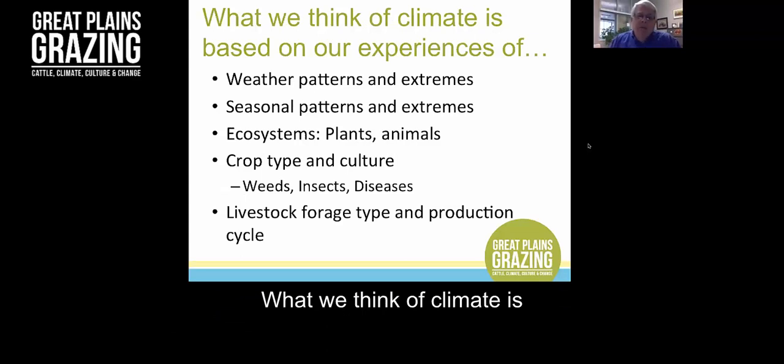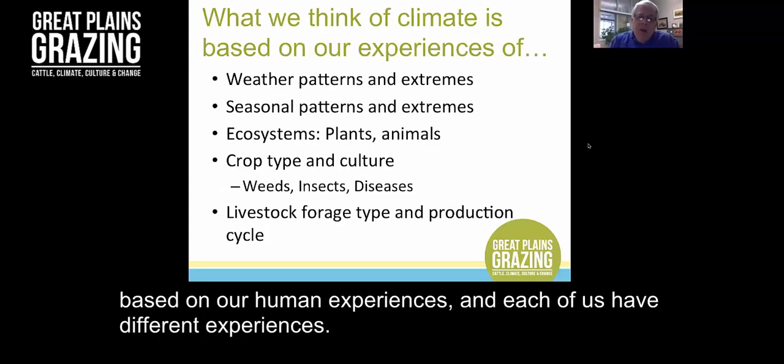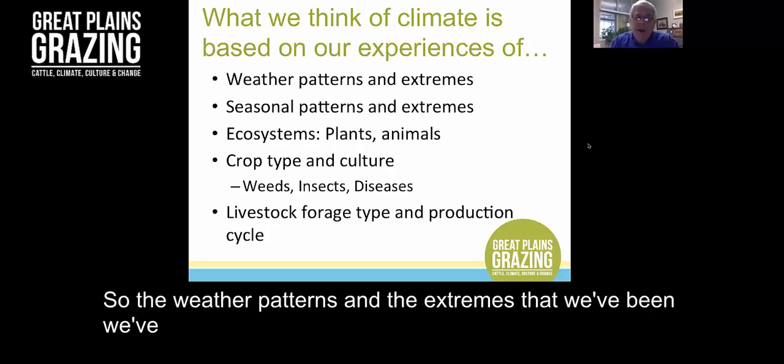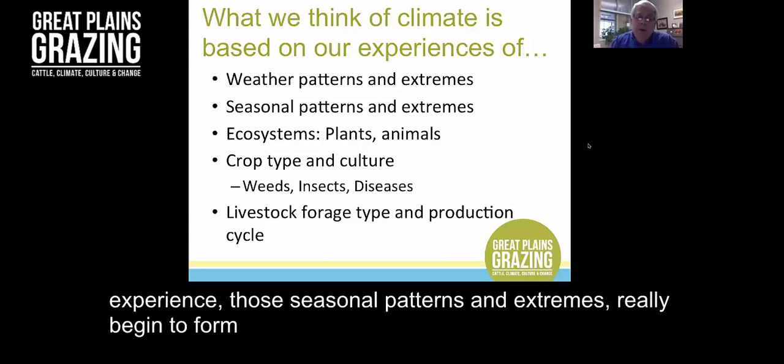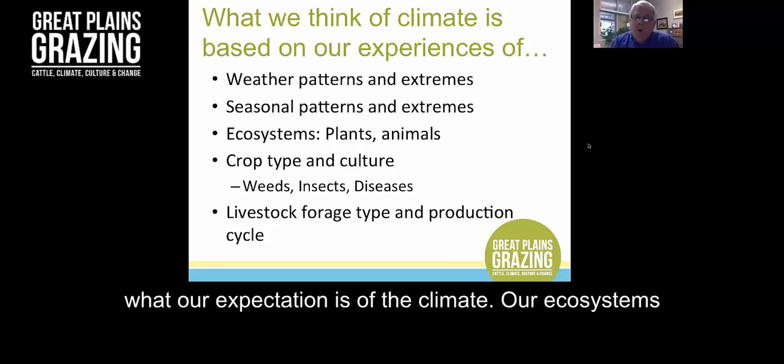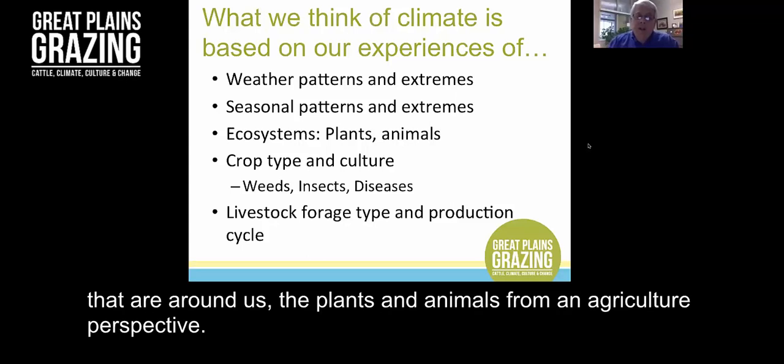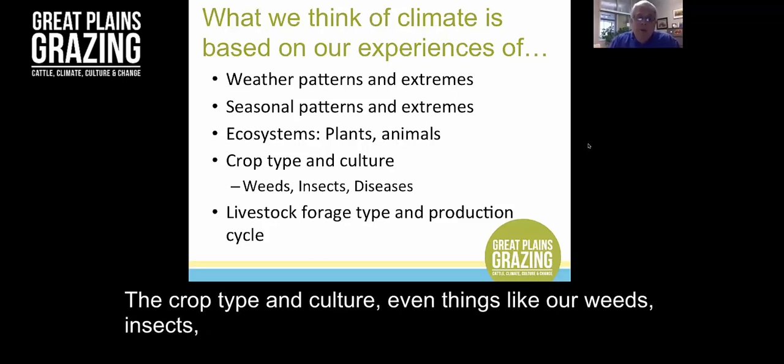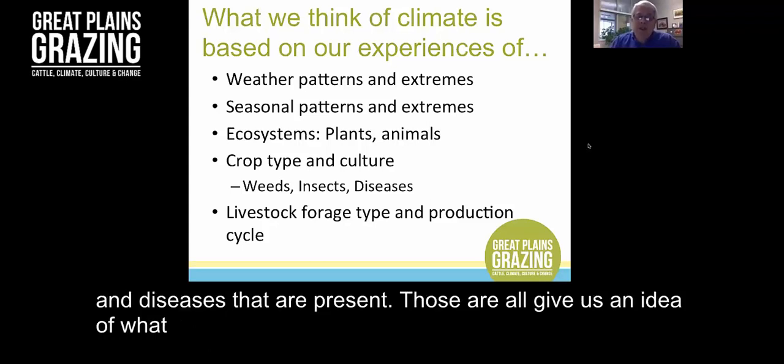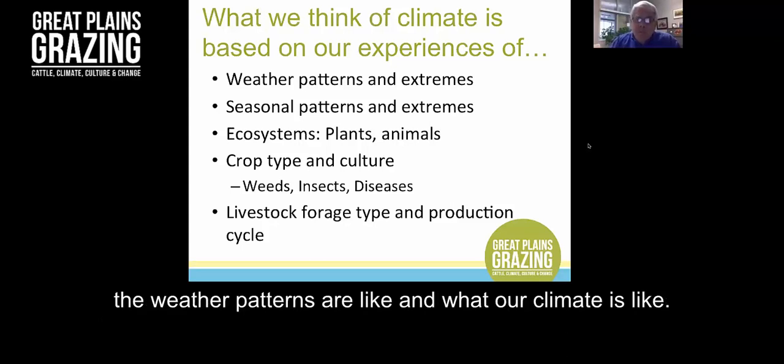What we think of climate is based on our human experiences, and each of us have different experiences. The weather patterns and extremes that we've experienced, those seasonal patterns really begin to form what our expectation is of the climate. Our ecosystems that are around us, the plants and animals from agriculture perspective, the crop type and culture, even things like our weeds, insects and diseases that are present all give us an idea of what the weather patterns are like and what our climate is like.